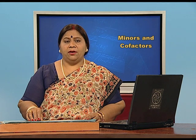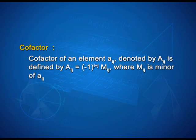What do you mean by a cofactor of an element a_ij? The cofactor, denoted by capital A_ij, is defined by A_ij equals minus 1 to the power i plus j, multiplied by capital M_ij, where M_ij is the minor of a_ij.